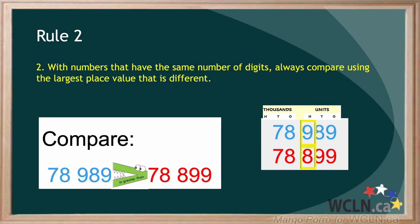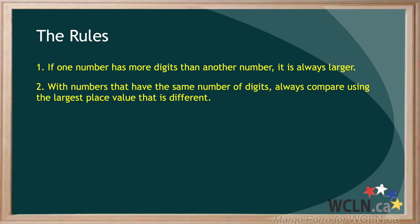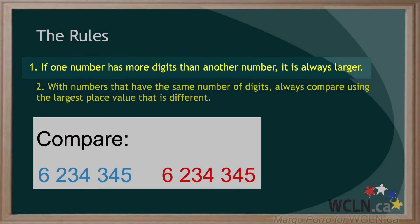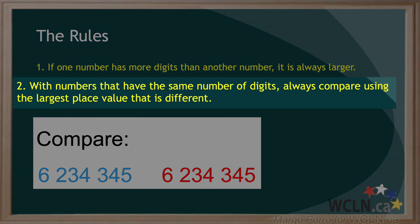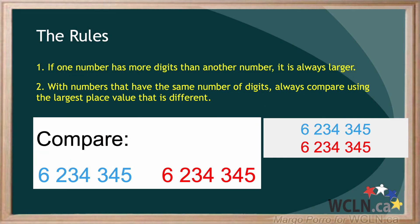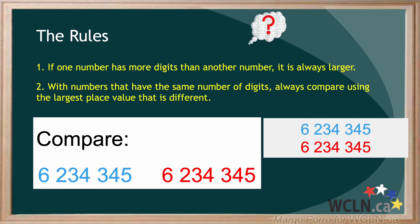Since the first number is greater, the alligator's mouth will be facing the first number, and we read: 78,989 is greater than 78,899. In your work, you don't have to draw an alligator mouth — you can just write it like this. Let's try one last pair of numbers. The blue number has seven digits and the red number has seven digits, so rule number one doesn't apply — we go to rule number two. Lining them up, both numbers have six millions, two hundred thousands, three ten thousands, four thousands, three hundreds, four tens, and five ones. Sometimes numbers are not greater than or less than one another — this example is equal, and our poor alligator will be confused.